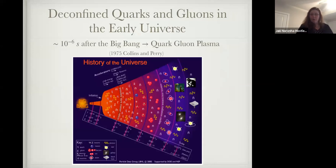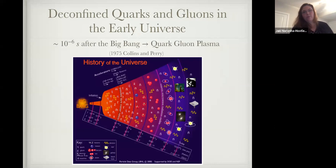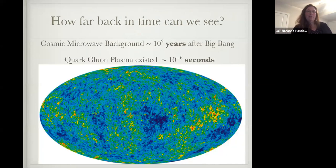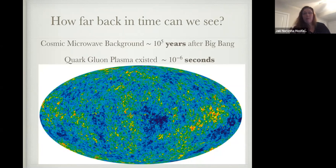Right now we want to focus on the regime where baryons and anti-baryons are roughly equal. One way to study this is to look at the early universe — around 10⁻⁶ seconds after the Big Bang, the whole universe was a quark-gluon plasma. But we don't have cosmological tools to go back that far. The cosmic microwave background happened 10⁵ years after the Big Bang, whereas the QGP existed at 10⁻⁶ seconds — very different timescales. So this unfortunately doesn't give us direct information about the QGP phase.